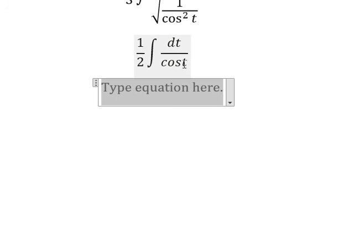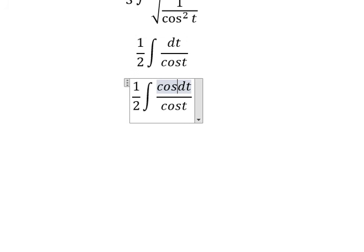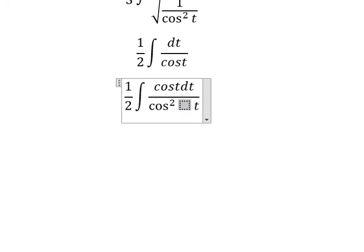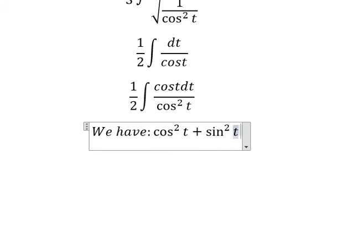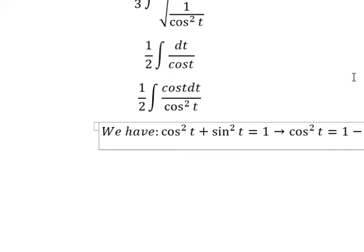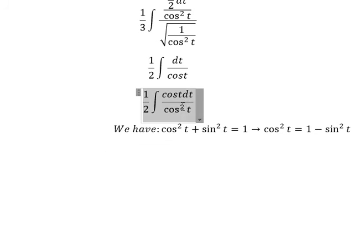We have the formula cos squared t plus sin squared t equals 1, so cos squared t equals 1 minus sin squared t. Now we apply this formula.